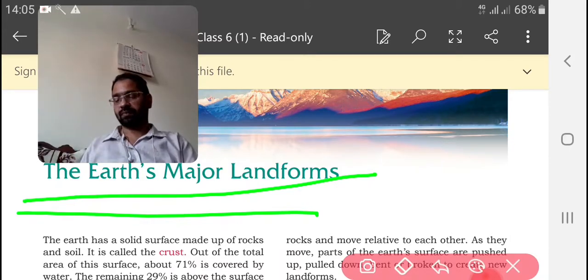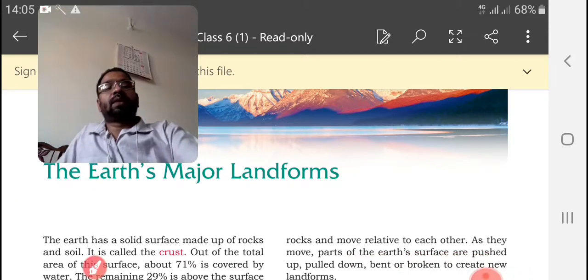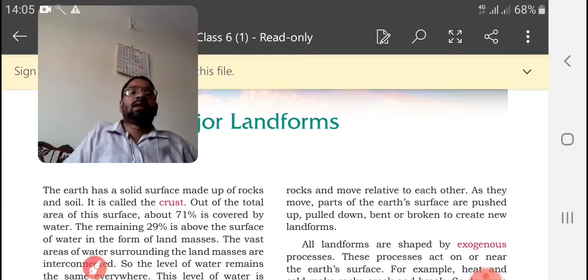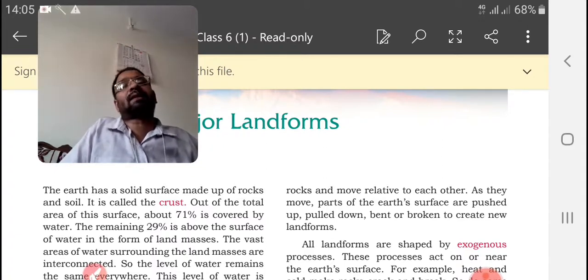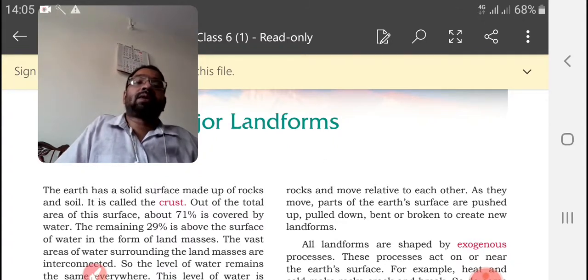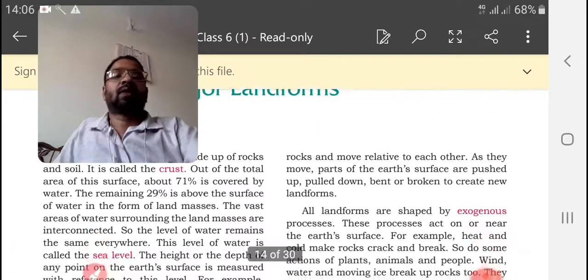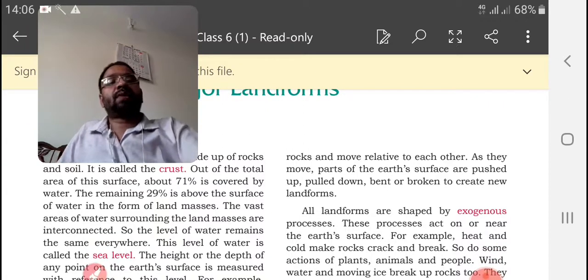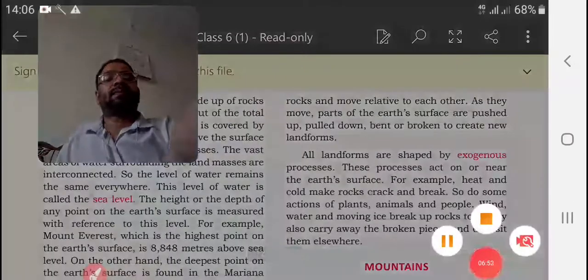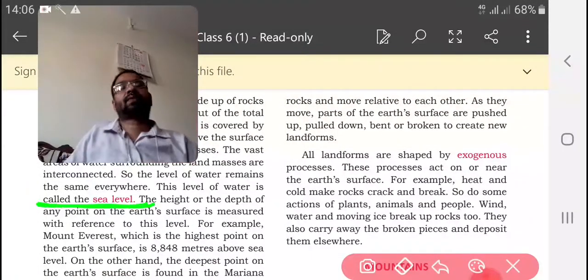Here we know crust. Earth has a solid surface made up of rocks and soil, that is crust. Uppermost layer of the earth is known as crust. We can say 71 percentage of crust are under the water and 29 percentage are elevated above the sea level. In this 29 percentage of crust only we people are living. Usually we are taking measurement from sea level.